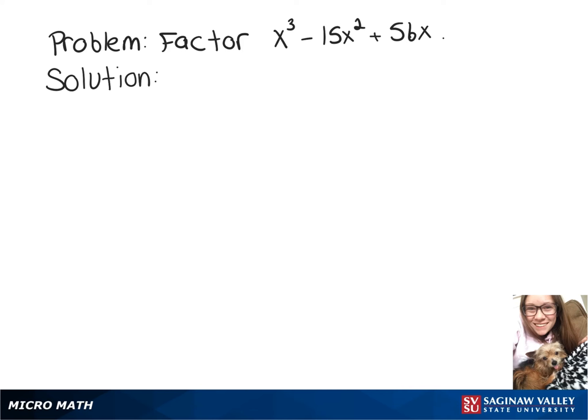We're going to factor x cubed minus 15x squared plus 56x. Since each of those terms has an x in it, we can factor that out. So we can rewrite this as x times x squared minus 15x plus 56.